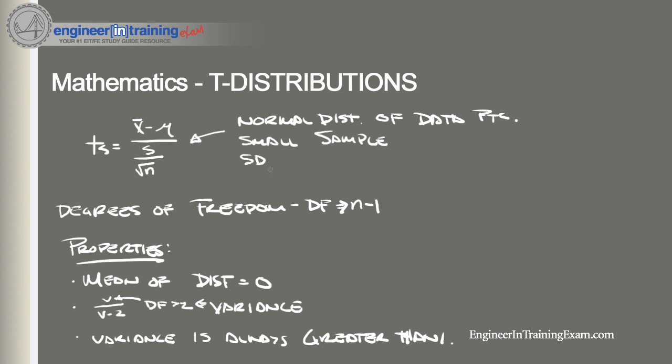Now, once again, we need to reiterate that we're dealing with nearly normal or normal distributions, and the only reason we're not using the normal distribution data or the z-score is because we have a small sample size or don't have the standard deviation of the population as a whole.